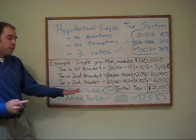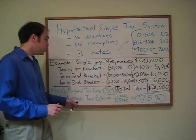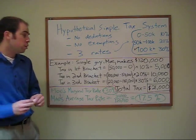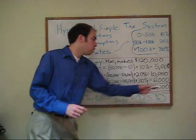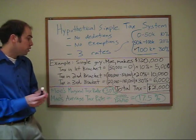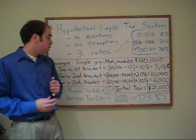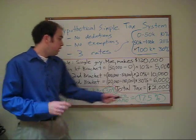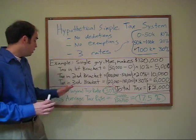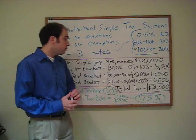However, the marginal tax rate should not be confused with the average tax rate. The average tax rate that Moe would face is his total tax burden — which we calculated earlier as $21,000 — divided by $120,000, which is his total income. Moe's average tax rate is 17.5%, which is significantly lower than his marginal tax rate of 30%.